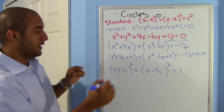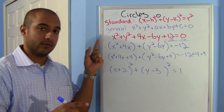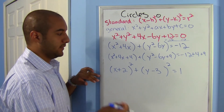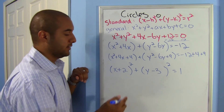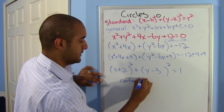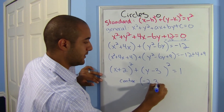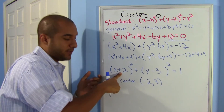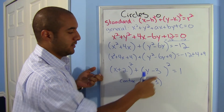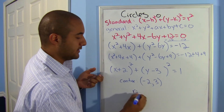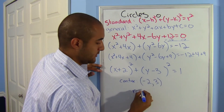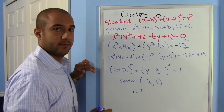Now I have it in standard form. Notice that now you know what your center is — if you have to graph, you can go ahead and do that. Your center is negative 2, 3. Remember, because it says plus here, that means the coordinate is the opposite, so negative 2, 3. And my radius — remember, I take the square root of whatever is on the right side. The square root of 1 is 1, so my radius is 1.